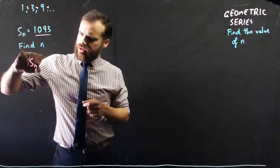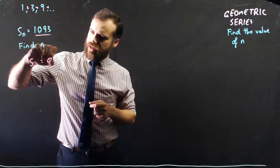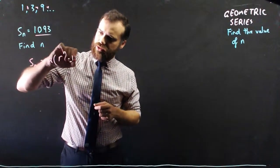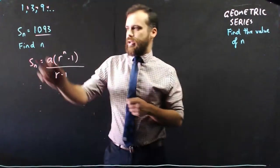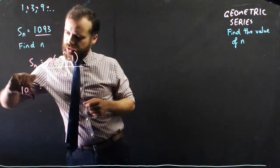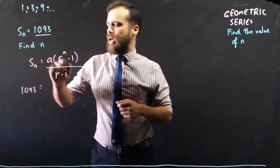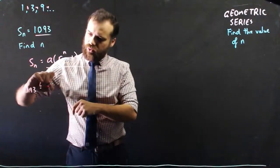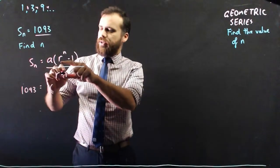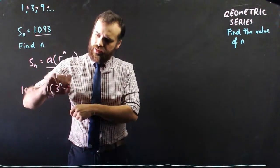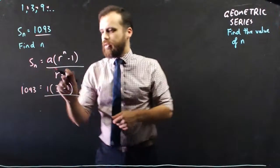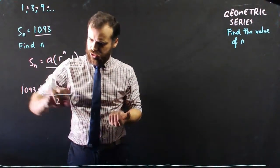So our geometric series formula is a bracket r to the n minus 1 over r minus 1. In this case, Sn is 1,093. The a value, first term is 1. The common ratio, 3 divided by 1 is 3, so 3 to the n minus 1 over r minus 1, 3 minus 1, which is 2.